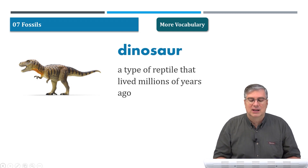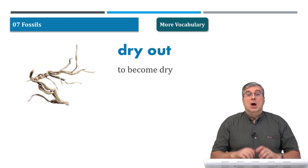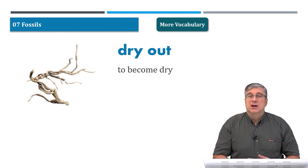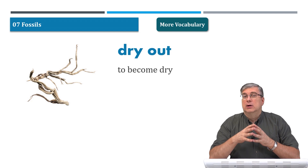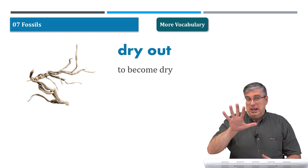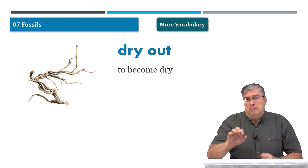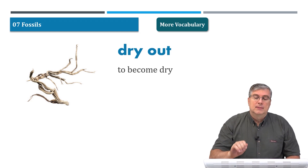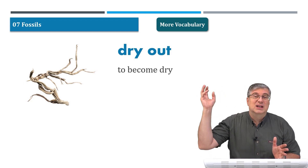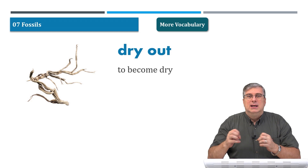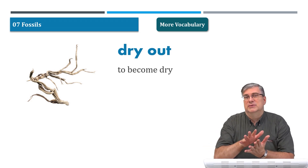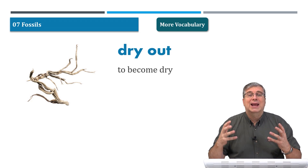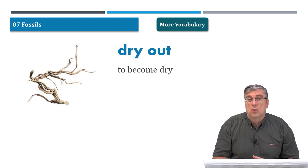Our last word is 'dry out' — to become very dry, meaning all the water leaves something. Remember the mud example: the mud is wet, that's why you can push your hand into it. But imagine it doesn't rain for a long time and the sun is very hot — the sun dries out all the mud. All the water comes out, and the mud becomes hard. When there's no moisture or rain, things will dry out.